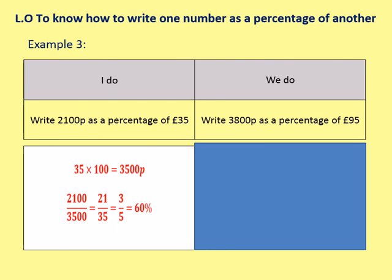Okay, so next one, which is a bit more tricky. I do is to write 2100p as a percentage of £35. So the tricky thing here is that we have two different units. We've got pence and we've got pounds. We need to compare those two, and in order to compare them, we need to get them to the same units.